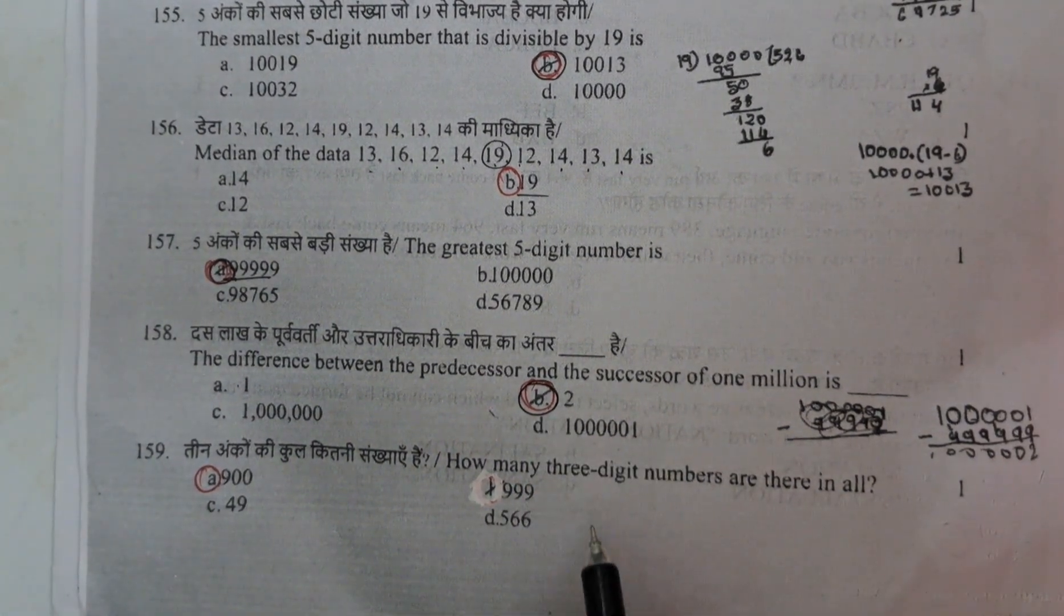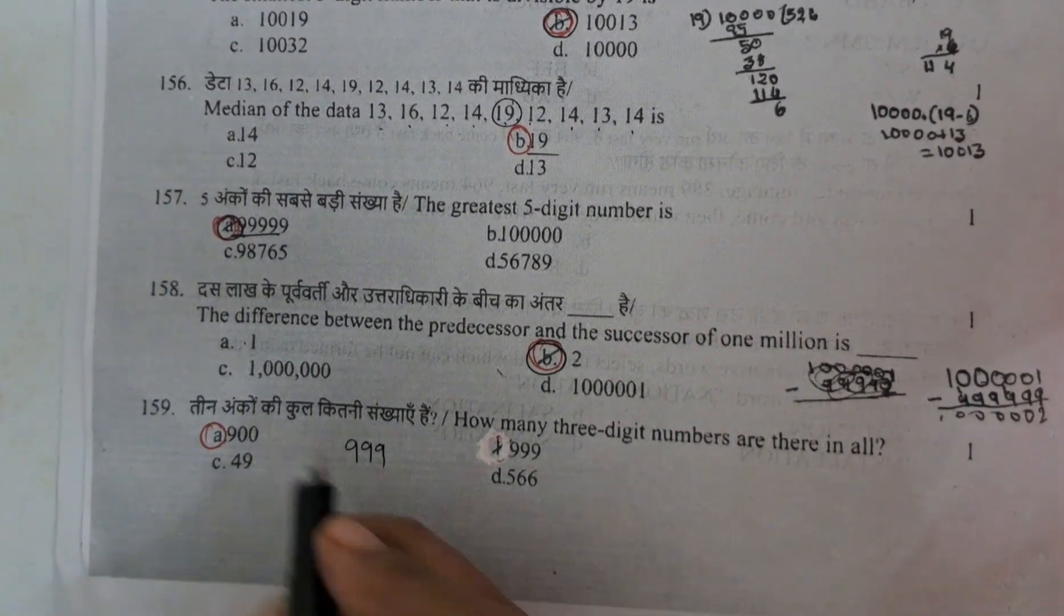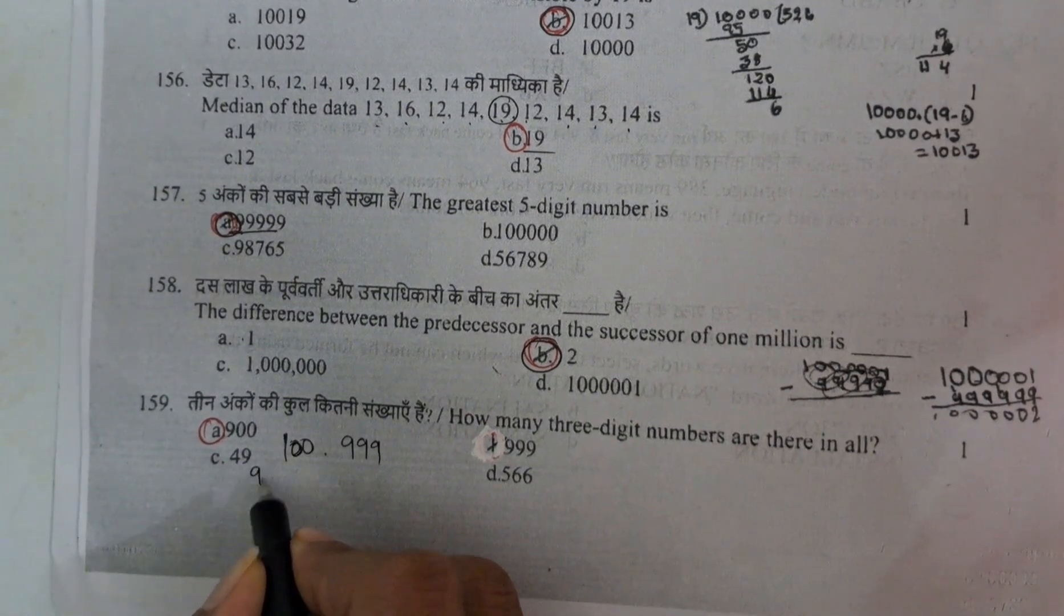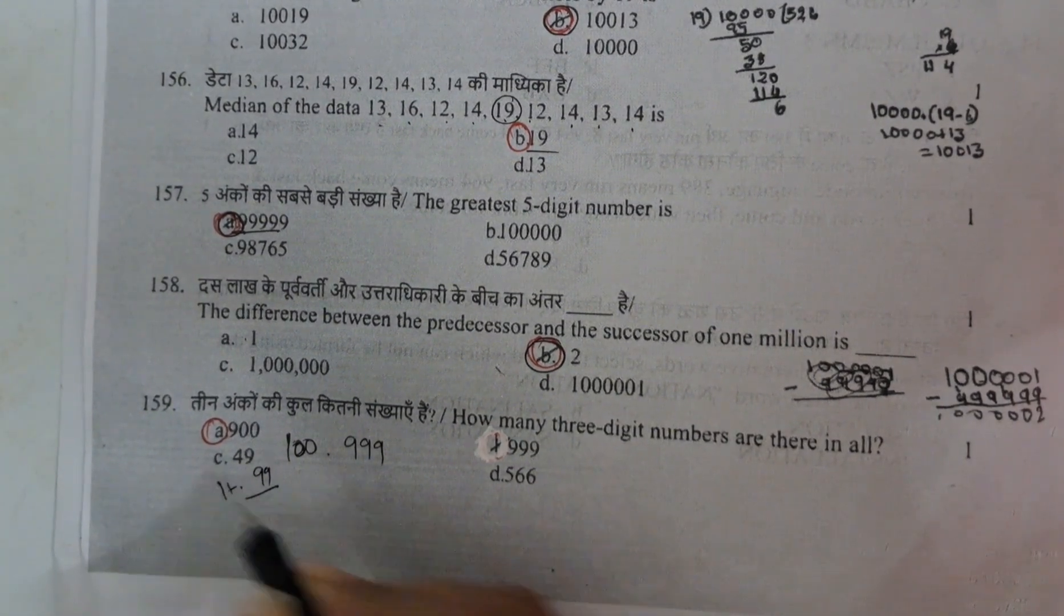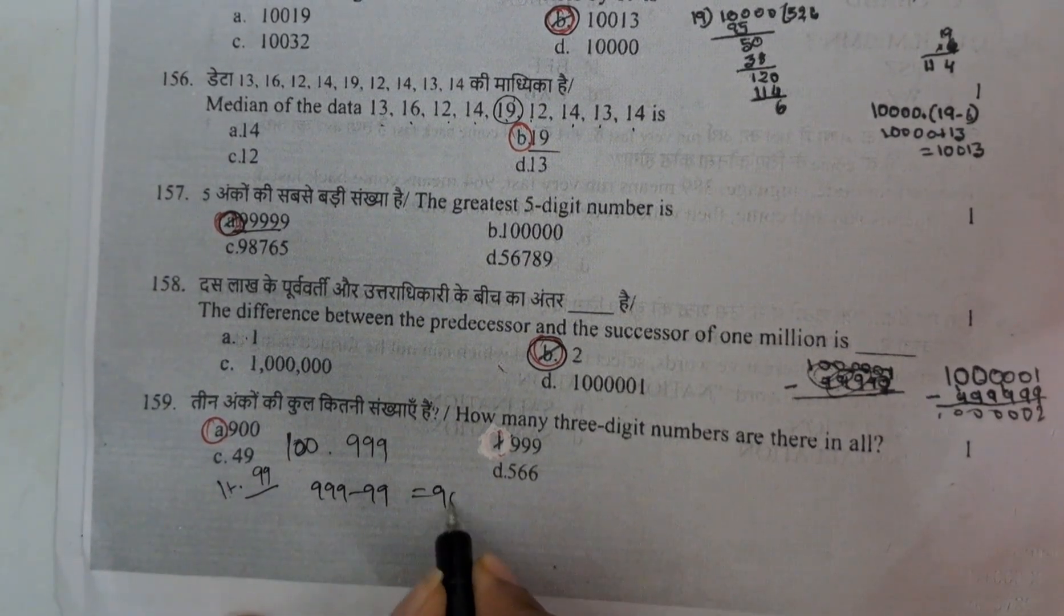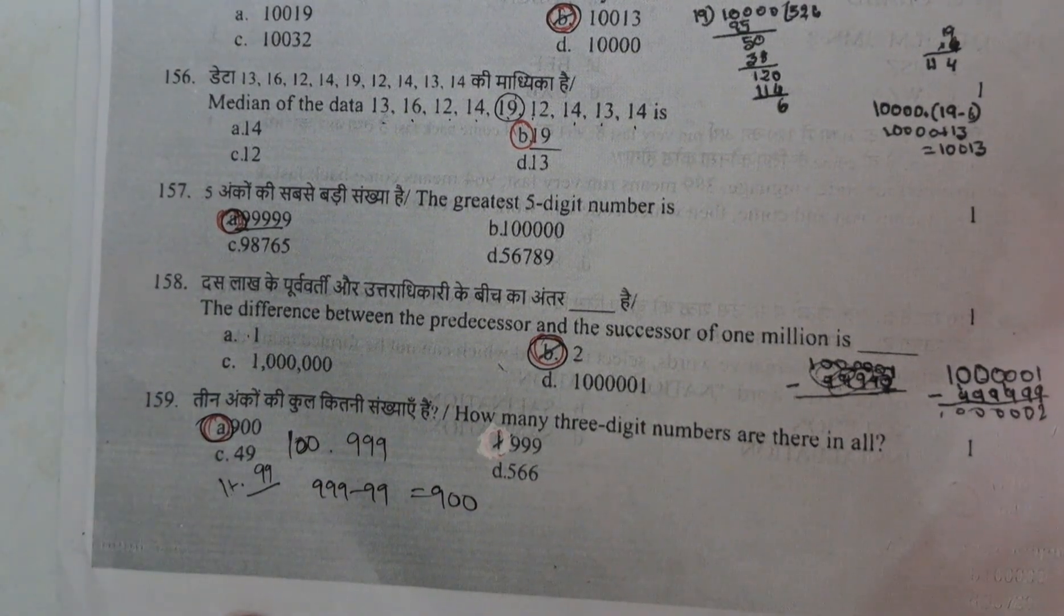Every number, the predecessor and successor of every number, the difference should be 2 only. And next, how many 3 digit numbers are in all? Up to 3 digit numbers, we have 999. The 3 digit number starts from 100. Before 100 is 99.